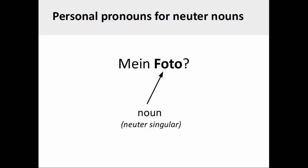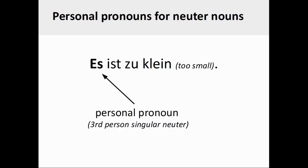The grammatical gender of the German noun Foto, or photograph, is neuter and the number of the noun is singular. If you were to see the definite article of the noun here, it would be das. Since Foto is a neuter singular noun, the matching personal pronoun needs to be used: es (neuter, third person singular).